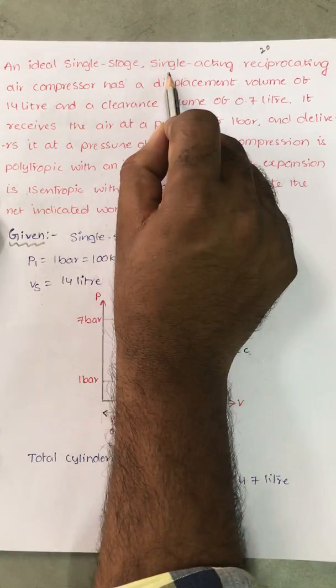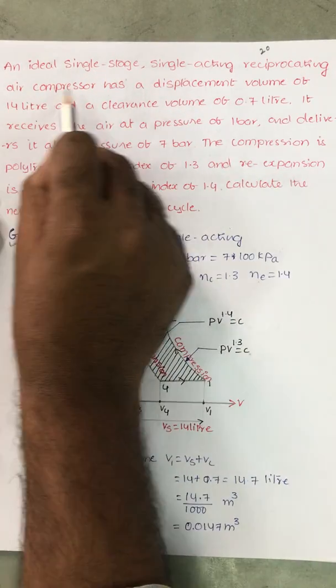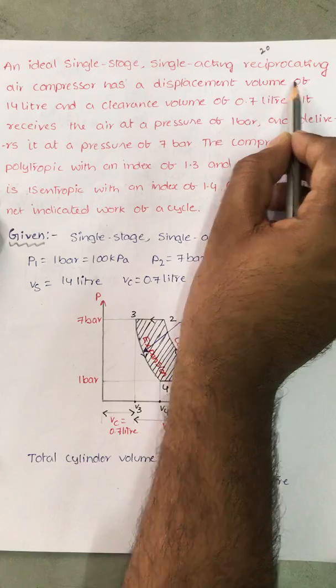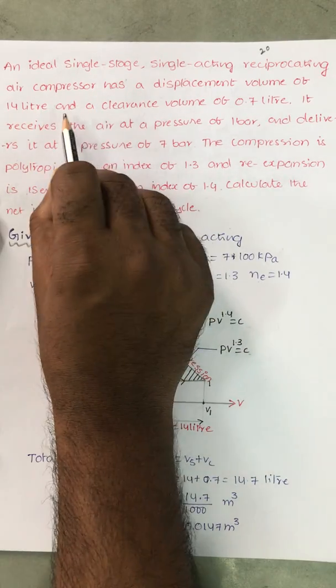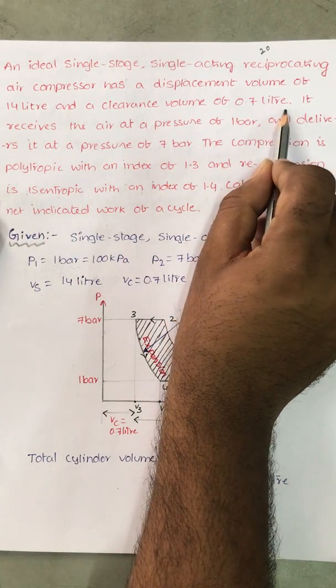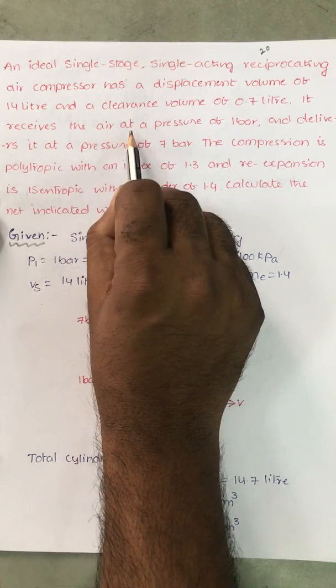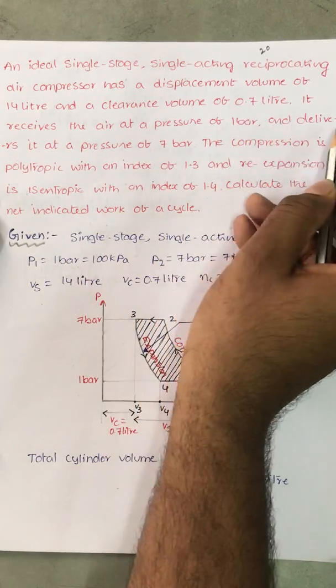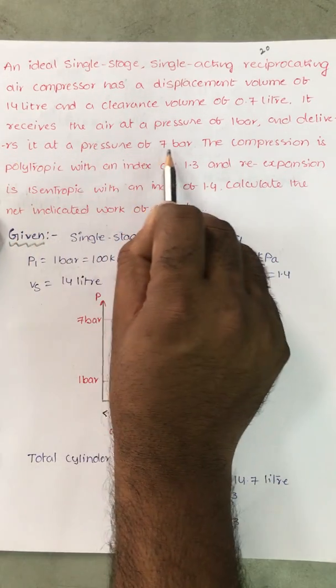An ideal single stage single acting reciprocating air compressor has a displacement volume of 14L and a clearance volume of 0.7L. It receives the air at a pressure of 1 bar and delivers it at a pressure of 7 bar.